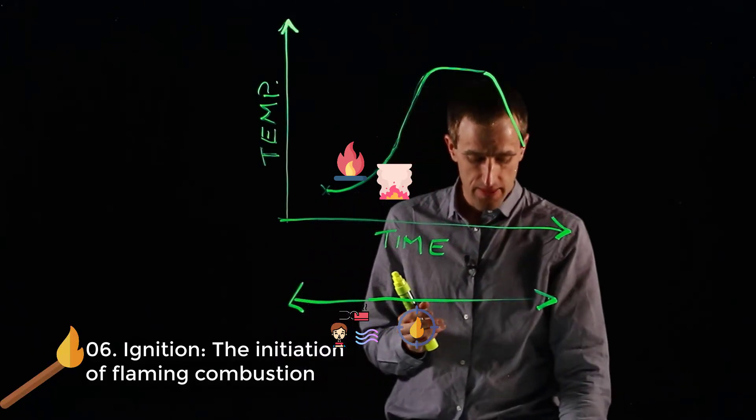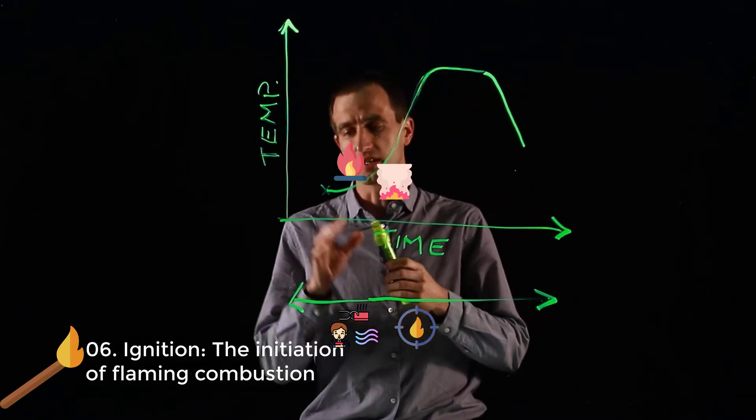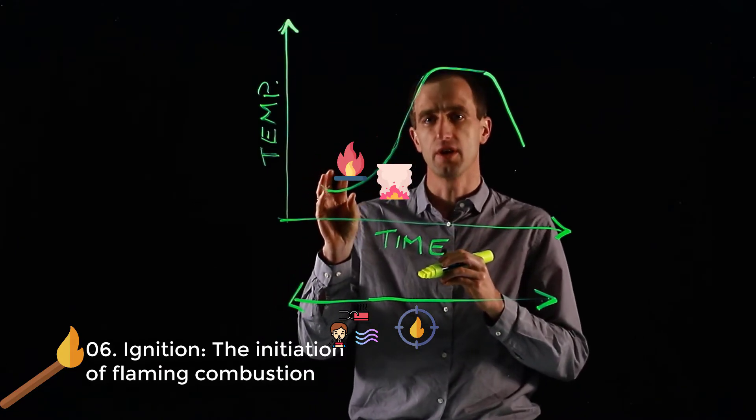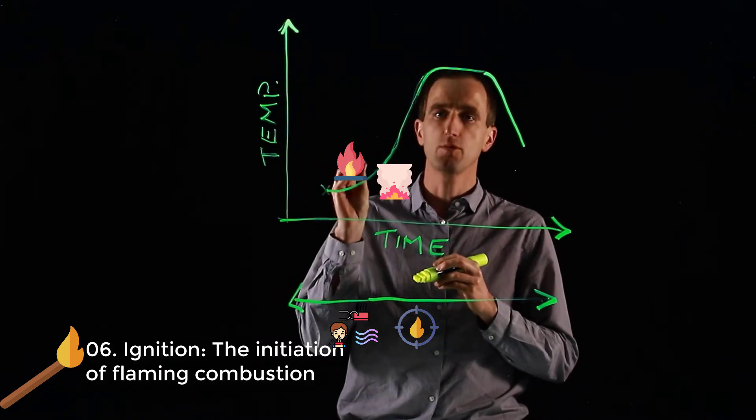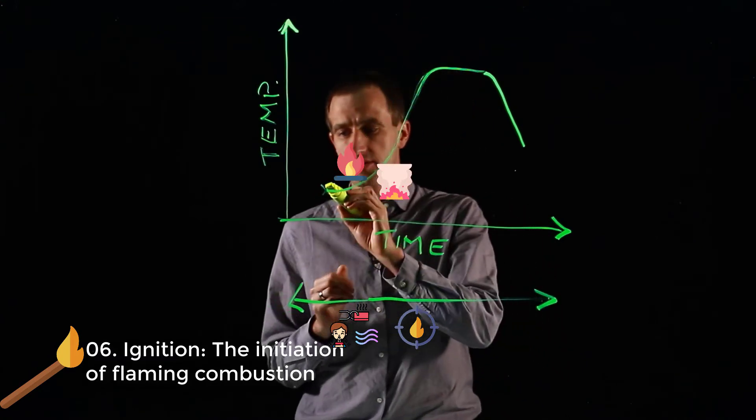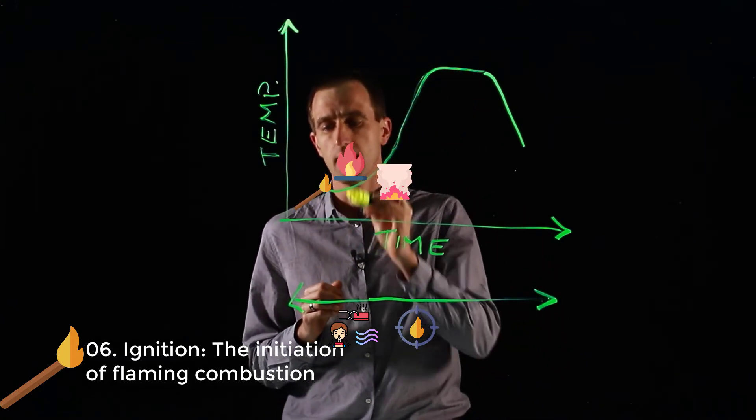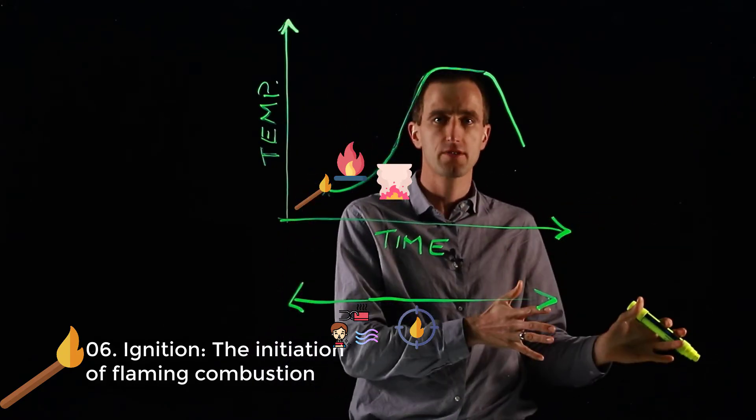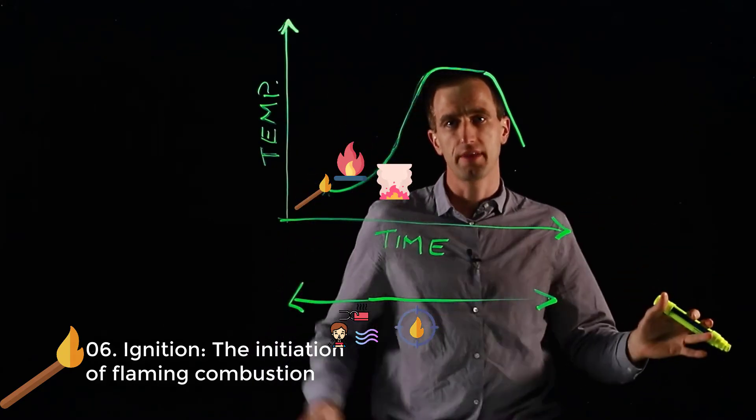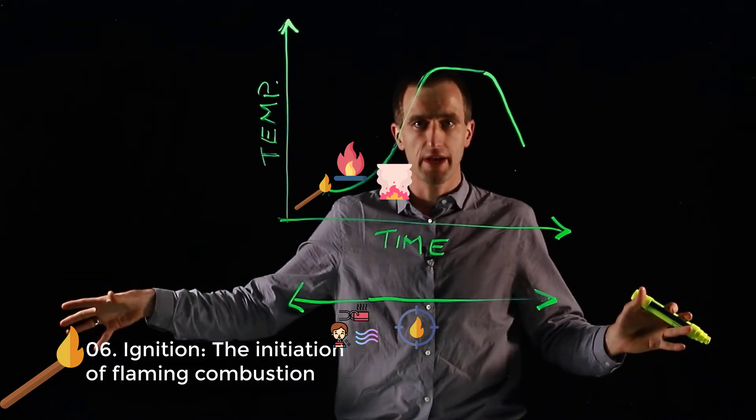Once we've done that then we will go through to looking at ignition, the initiation of flaming combustion. We'll have a look at ignition and how do we start. But ignition doesn't occur at only the beginning of a time temperature curve. That might be the start, but also for instance my chair is on fire, it's burning, and then the couch next door also catches fire.